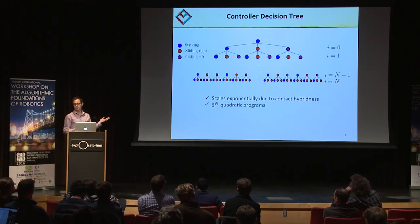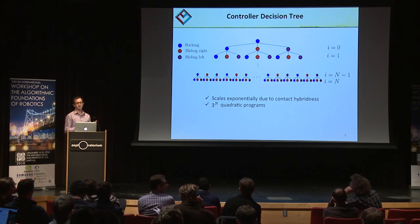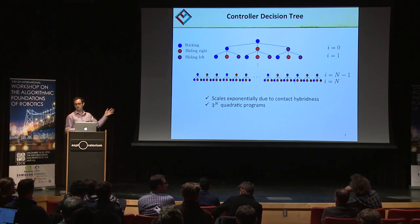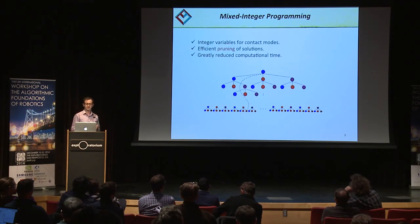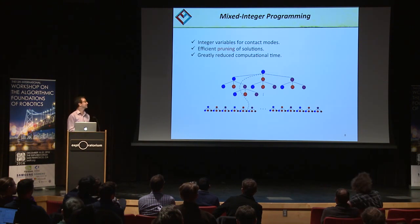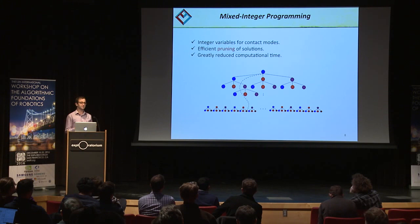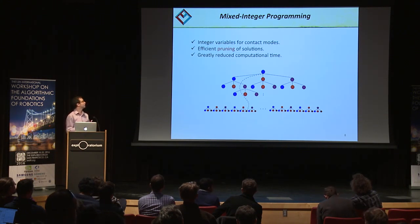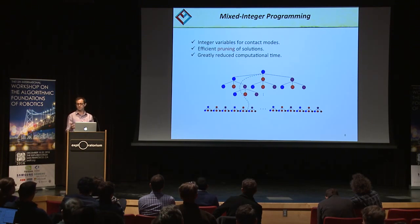This is too computationally expensive to solve, and brute force methods are not an option. The question is how do you reformulate this so you can solve it in real time? The hybrid nature of contact is well-suited for tools from integer programming, where the idea is to introduce integer variables into your program to denote the contact modes. Putting it in this form, there are efficient algorithms to prune the tree of solutions.